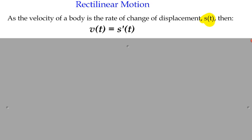If we think about the rate of change of displacement — say in metres — and we think about how that changes over time, metres per second, then we've got a quantity of not speed, because we're dealing with vector quantities, but velocity. Velocity is the vector equivalent of speed; it can be positive or negative. So if we differentiate our function of displacement, we're going to get our function of velocity.